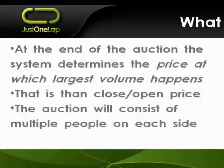Importantly, that last auction price will consist of multiple people on either side. Any other trade during the course of the day is one buyer and one seller. Whereas in the auction, it could be multiple buyers on one side, multiple sellers on the other. For a big top 40 stock, it's definitely going to be multiple buyers and sellers — that last trade can often be tens, if not hundreds of millions of Rand. For smaller, less liquid stocks, not necessarily, but it certainly can be multiple people on both sides.